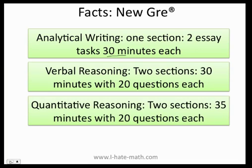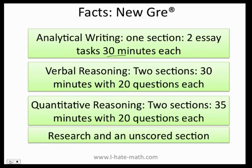Moreover, you're going to have the quantitative reasoning section. There are two sections with 35 minutes and 20 questions each. Then you'll have a research section and an unscored section — the research section will be identified, but for the unscored section you don't know if it's part of the test or not.